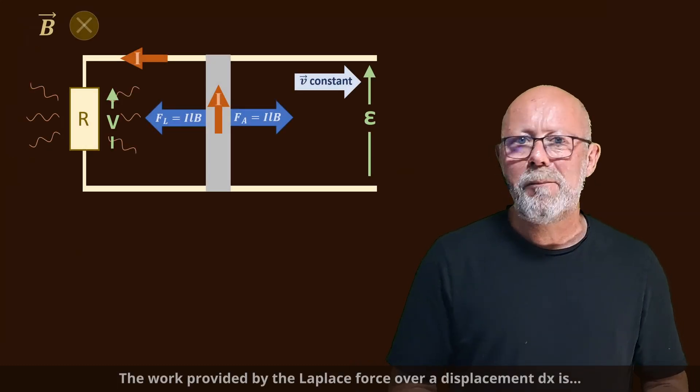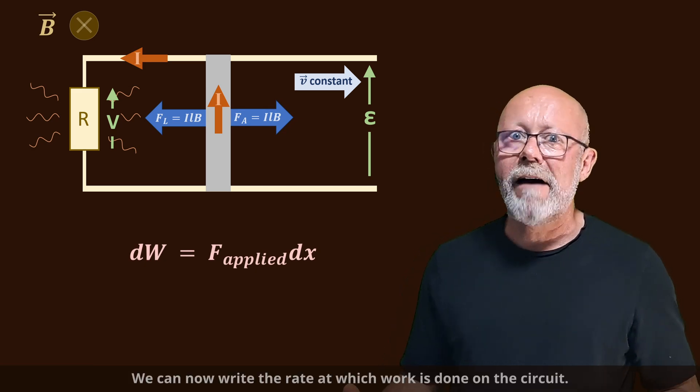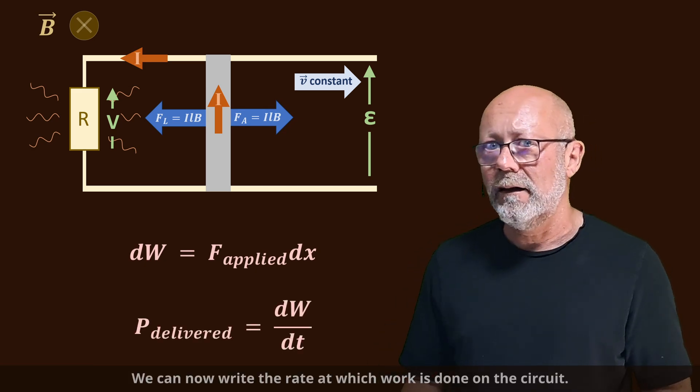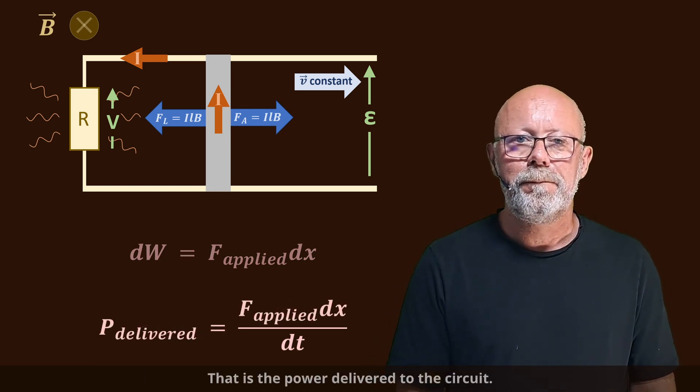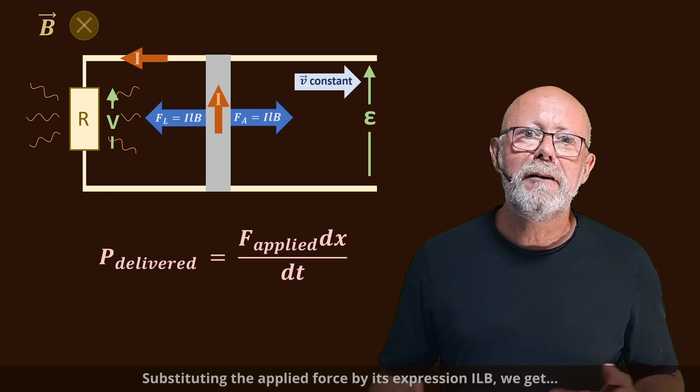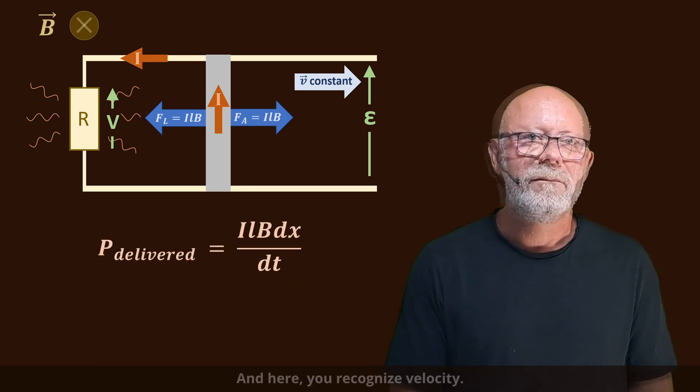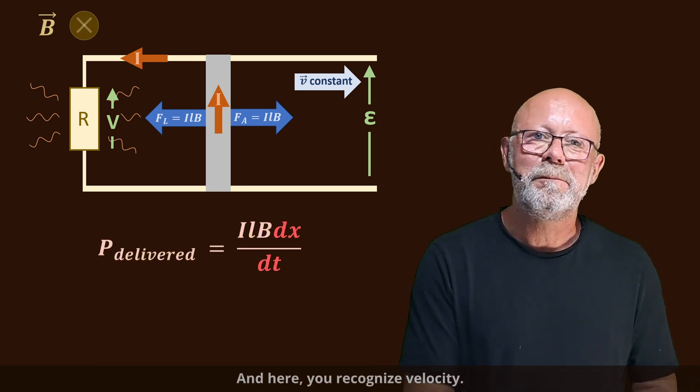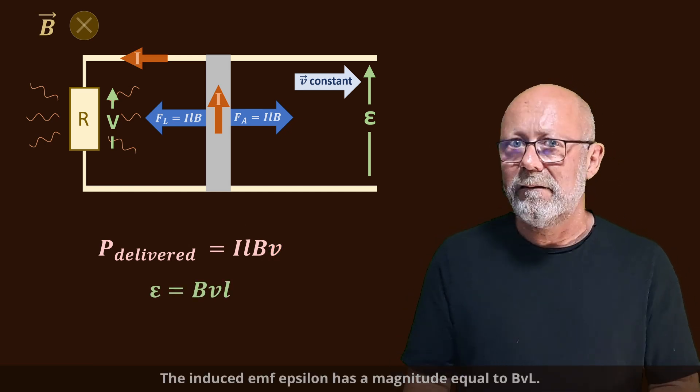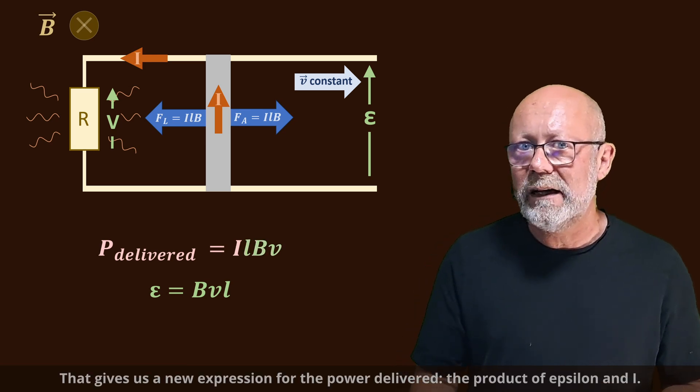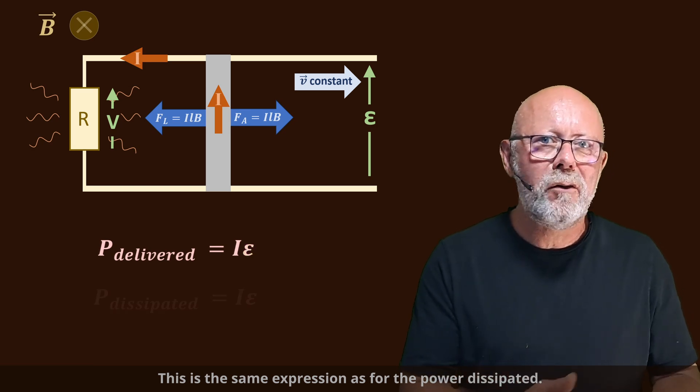The work provided by the applied force over a displacement dx is... We can now write the rate at which the work is done on the circuit, that is, the power delivered to the circuit... Substituting the applied force by its expression ILB, we get... And here, you recognize velocity. The induced EMF epsilon has a magnitude equal to BVL. So that gives us a new expression for the power delivered, the product of epsilon and I.